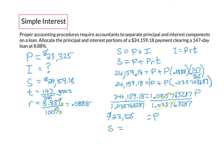Maturity value is equal to principal plus interest. So $24,159.18 equals our principal $23,325 plus interest. To isolate I we subtract $23,325 from both sides and when we do that, I ends up being $834.18. And so now we have all our values calculated.